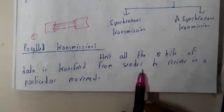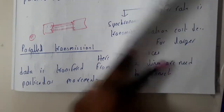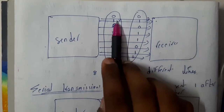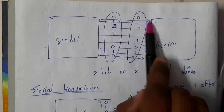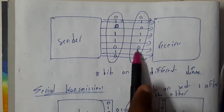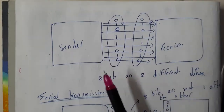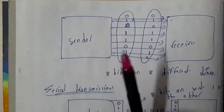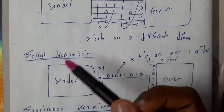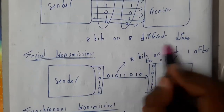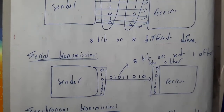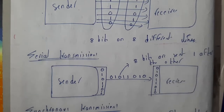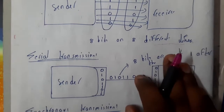The sender and receiver have dedicated 8 lines, and data like 0 0 0 1 0 1 1 1 0 1 0 is transferred — all at the same moment in time. The issue is that we need 8 different lines for 8 different bits. If there are 64 bits, transfer may be faster, but you need to establish all those connections and lines.